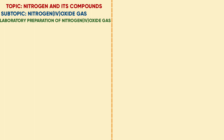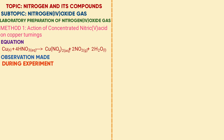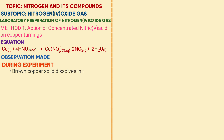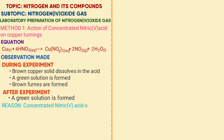Method one is the action of concentrated nitric acid on copper. The reagents are copper and 100% concentrated nitric acid. The equation is: copper + nitric acid → copper nitrate + nitrogen dioxide + water. The balanced equation is: Cu + 4HNO₃ → Cu(NO₃)₂ + 2NO₂ + 2H₂O. Observations: brown copper solid dissolves in the acid to form a green solution; brown fumes are formed. After the experiment, a green solution remains. Reason: concentrated nitric acid oxidizes copper to copper(II) nitrate solution, while itself is reduced to nitrogen dioxide and water.